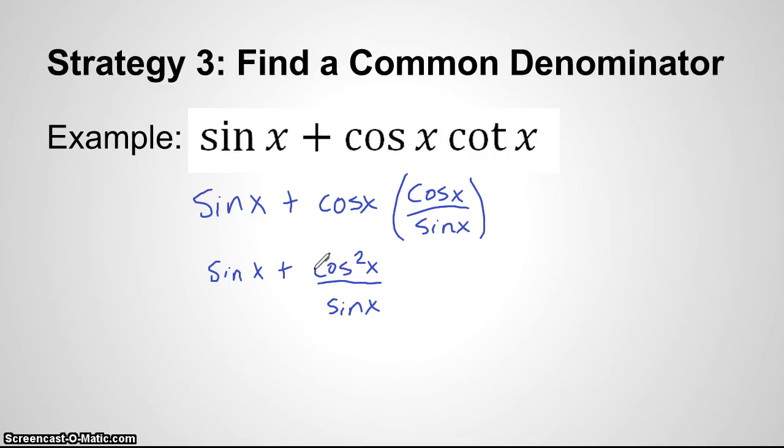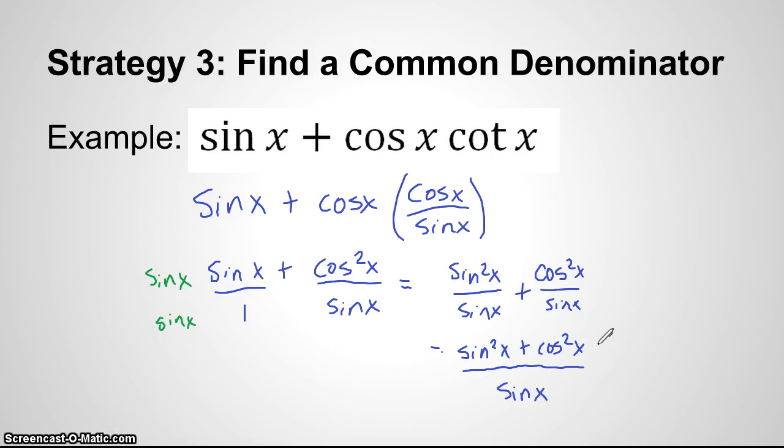So now we see we have a fraction here. We want to find a common denominator. So the common denominator here is going to be sine. So in order to get a common denominator, I'm going to need to multiply this one by sine of x both the top and the bottom. So that's going to give us sine squared over sine plus cosine squared over sine. Now that we have a common denominator, we can put them together under one fraction. So sine squared of x plus cosine squared of x over sine of x. Well, look at that. We got sine squared plus cosine squared.